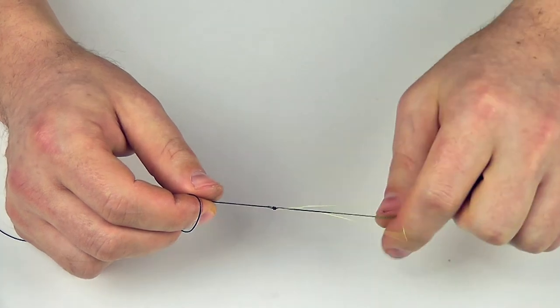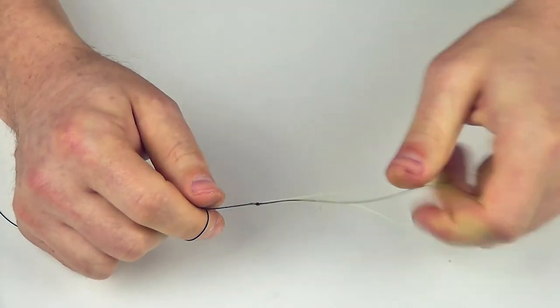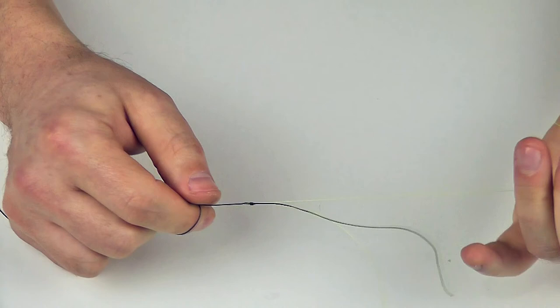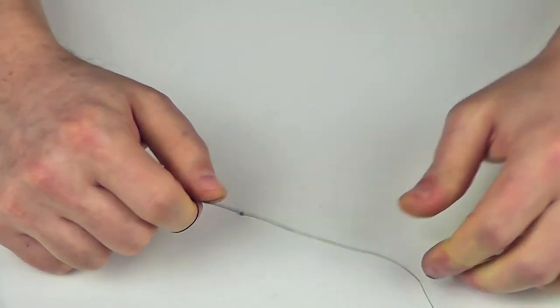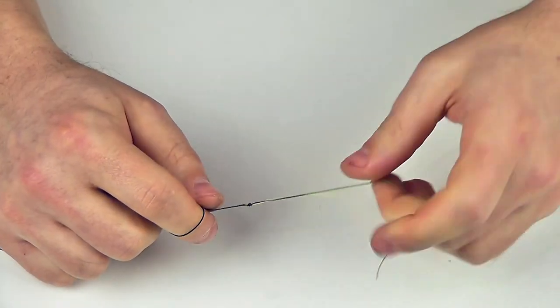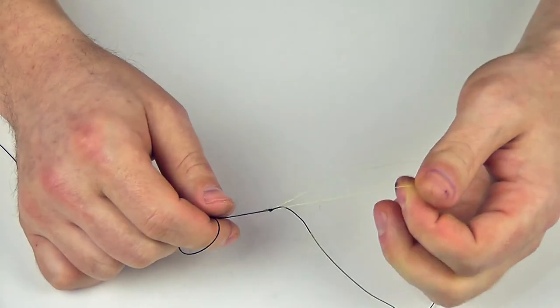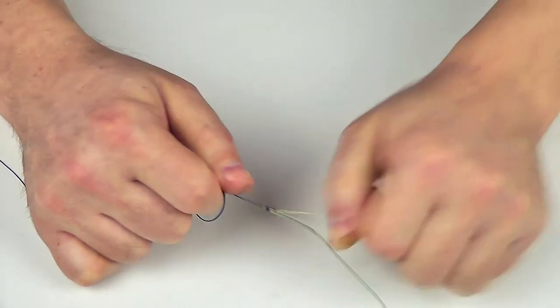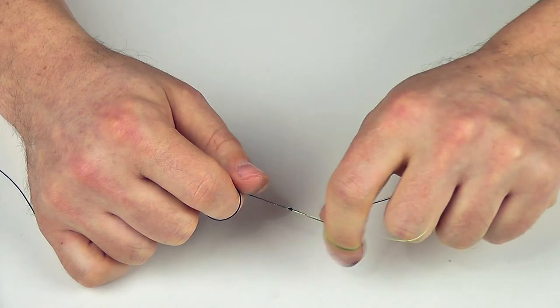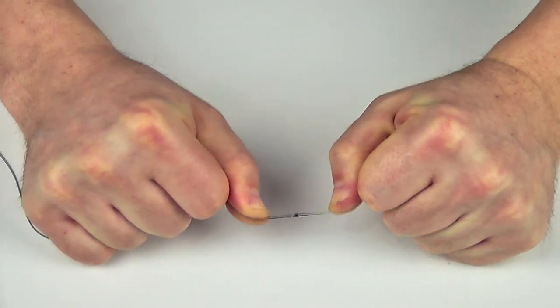Let's take the shock leader, hitch it. Then take the main line and give it a hitch too. Then we pull those tags of the line. Then let's take all these parts and tighten them nicely.